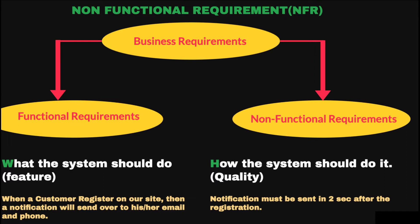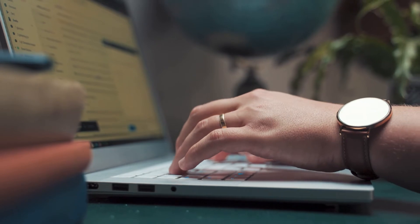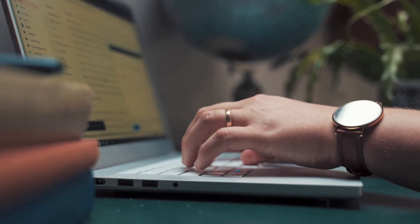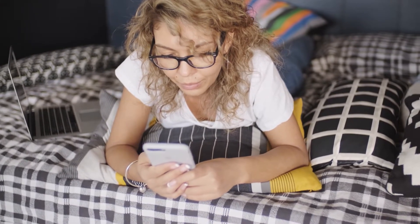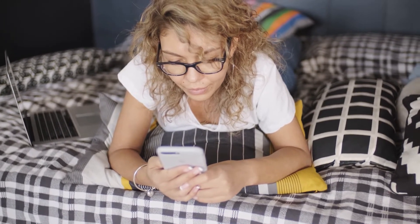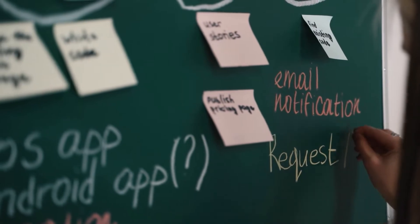Business requirements are split into two categories: functional requirements and non-functional requirements. Normally, functional requirements target what the system should do, and non-functional requirements target how the system should do it. For example, when a customer registers on our site, a notification will be sent to his or her email and phone number. This is the functional requirement of the application.